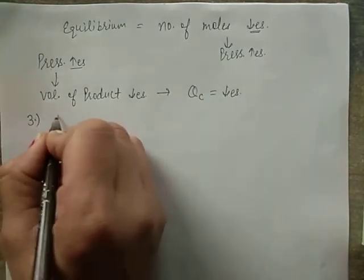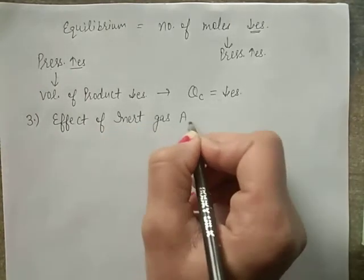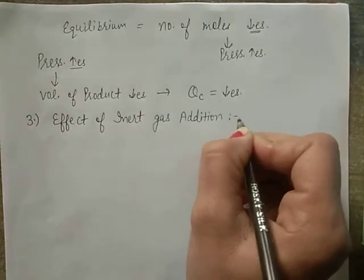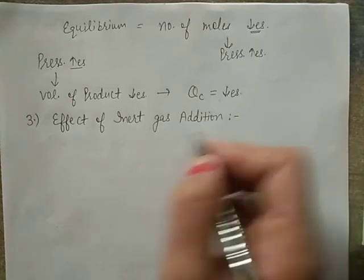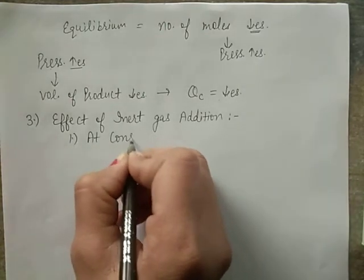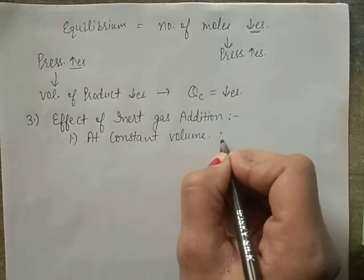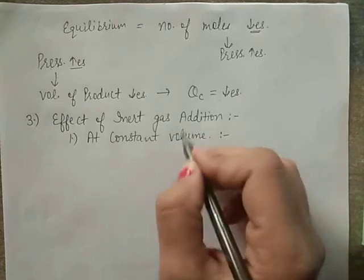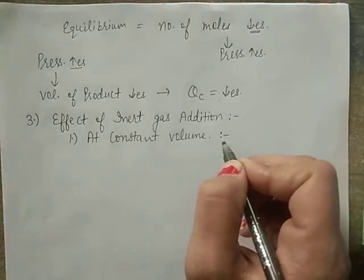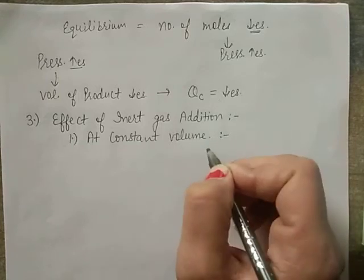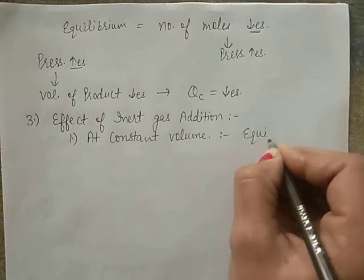Point 3: Effect of inert gas addition. An inert gas can be added under two conditions. At constant volume: if the inert gas does not participate in the reaction, there is no effect on equilibrium — equilibrium is unaffected.